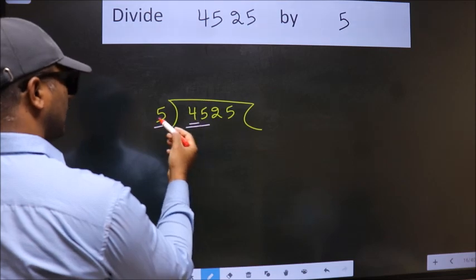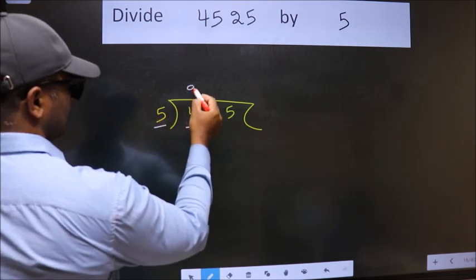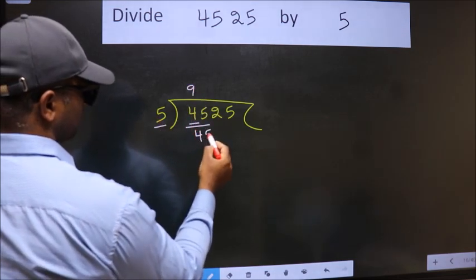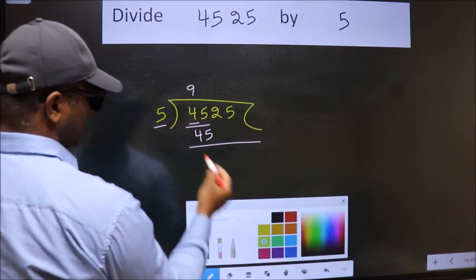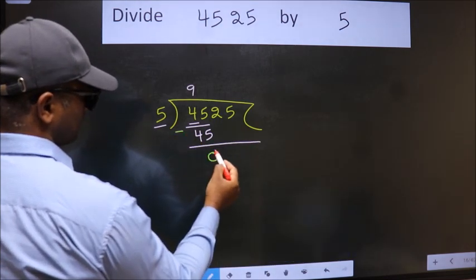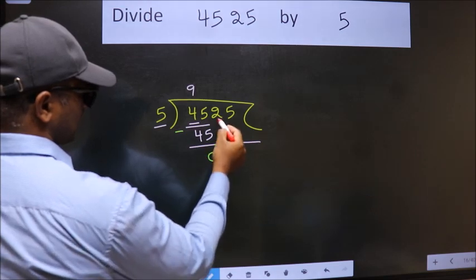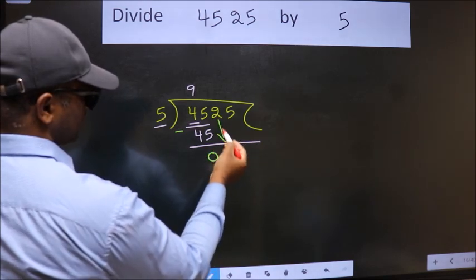When do we get 45 in five table? 5 nines 45. Now we should subtract. We get 0. After this, bring down the beside number. So, 2 down.